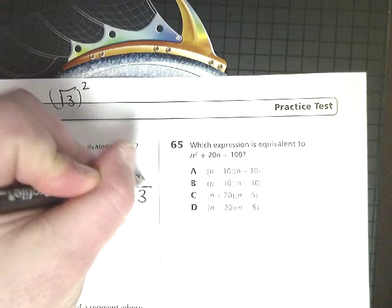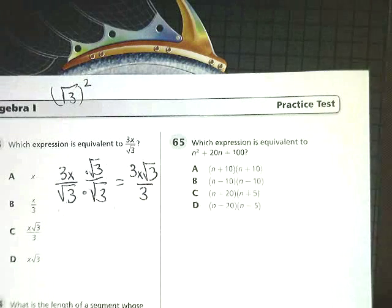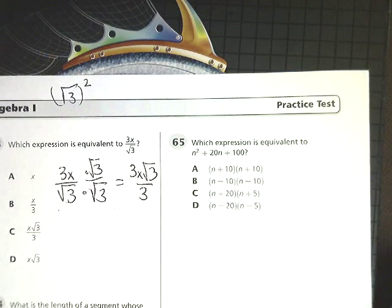And then you end up with this 3x times square root of 3 thing. Not quite done yet, almost finished. Now we have to see if there's anything on the top and the bottom that we can eliminate.